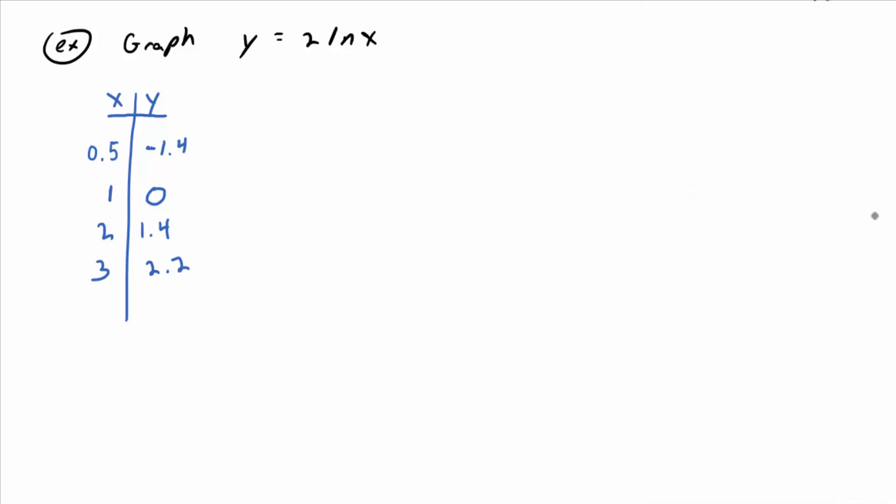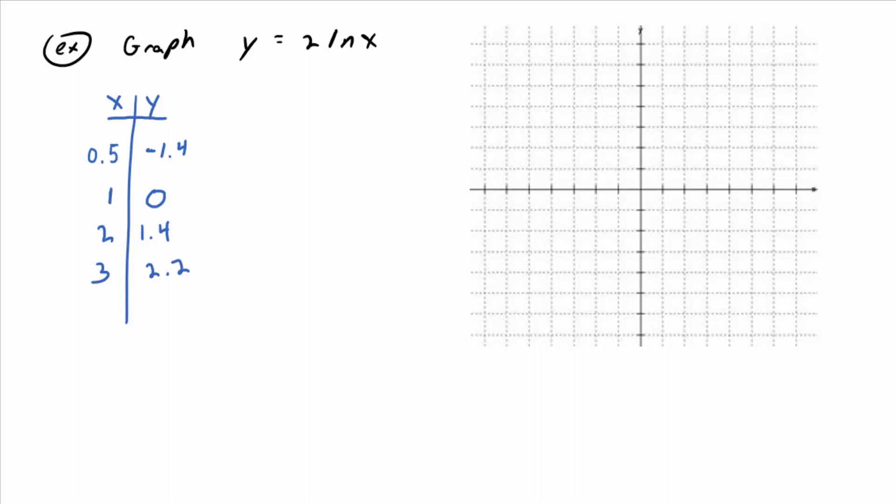And then again, it's just plotting points, knowing where the asymptote is, drawing a smooth curve, and you're done. So I'm going to start with 1, 0. It's a good kind of base, home base to start with.